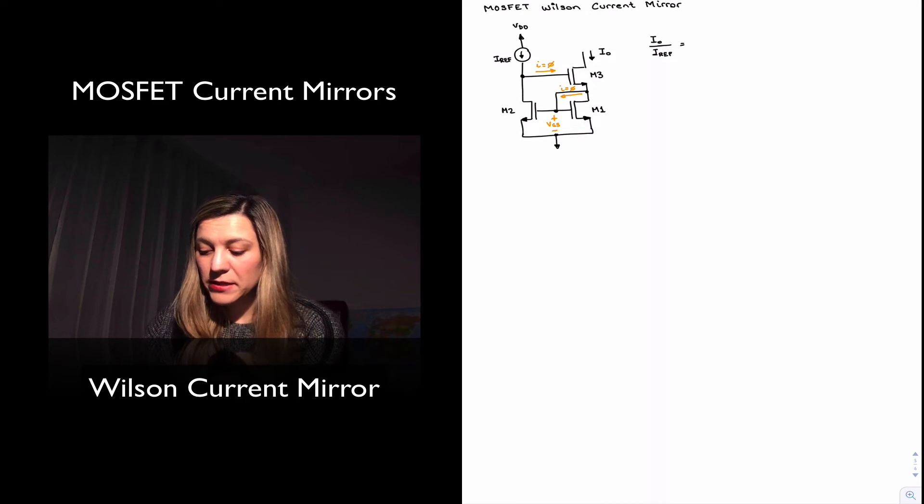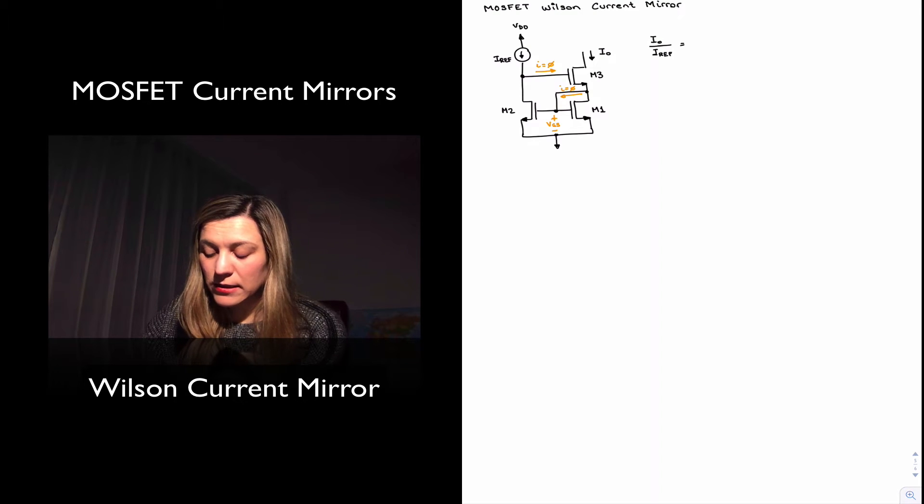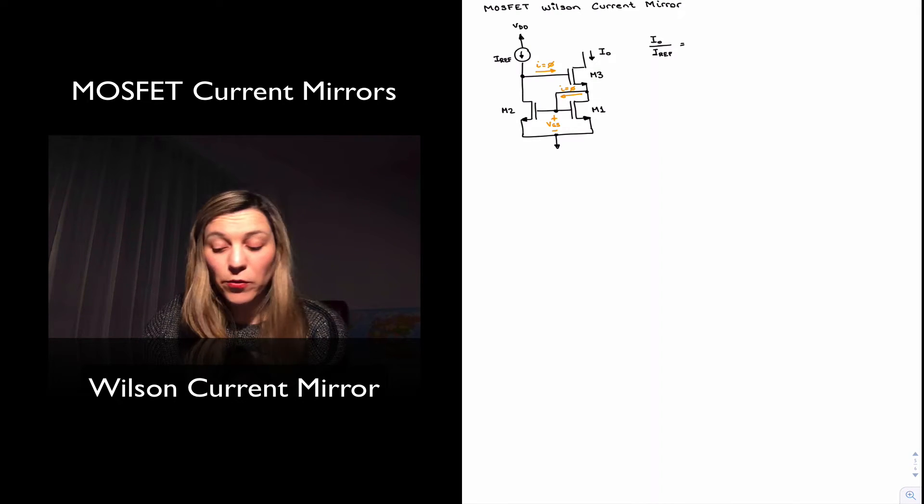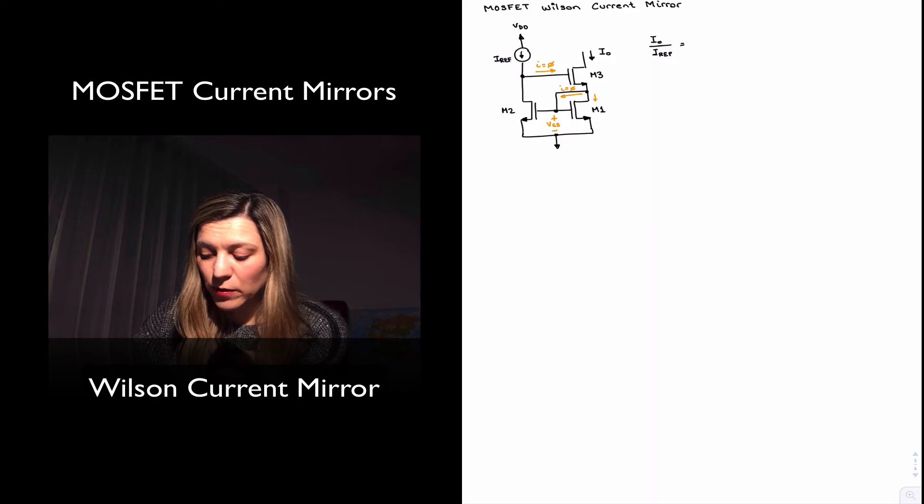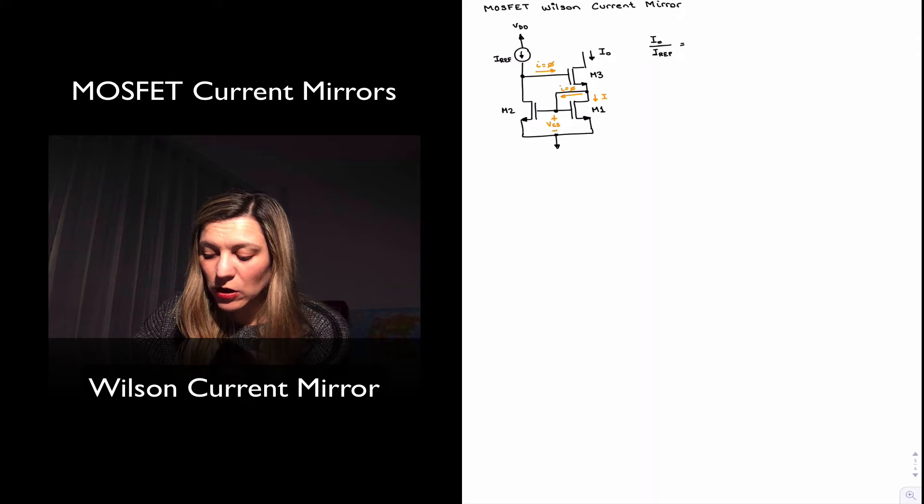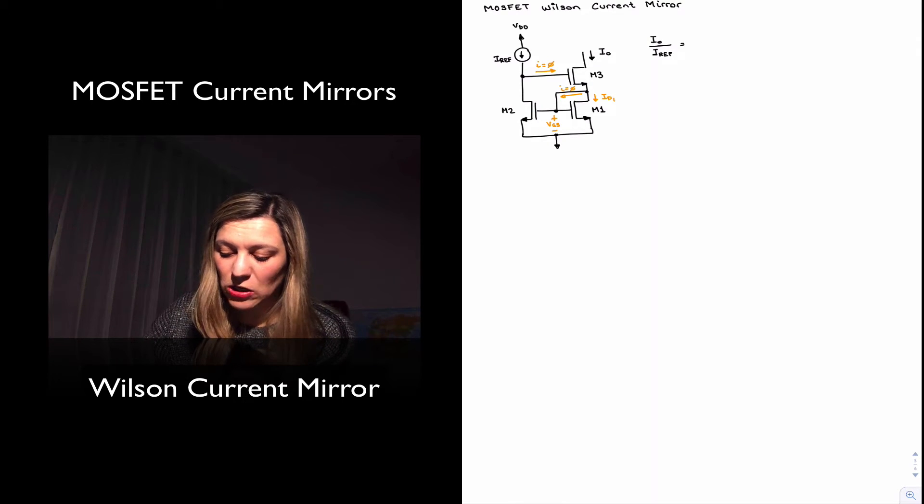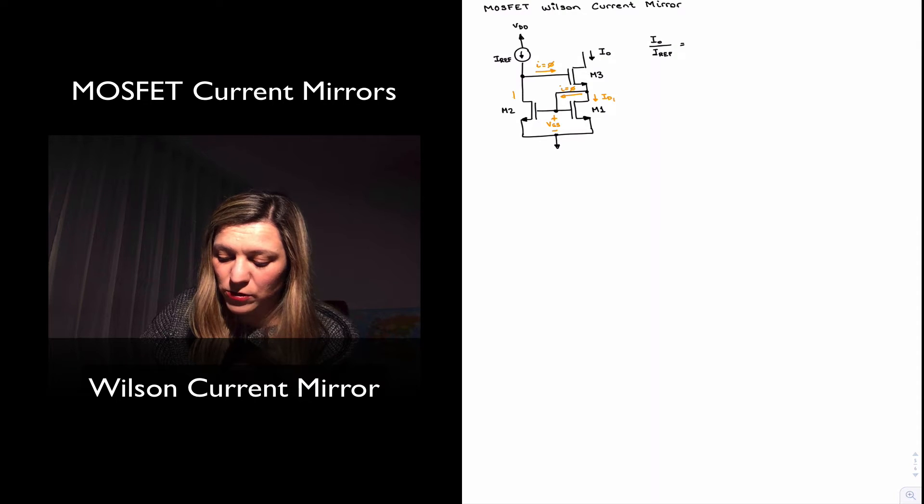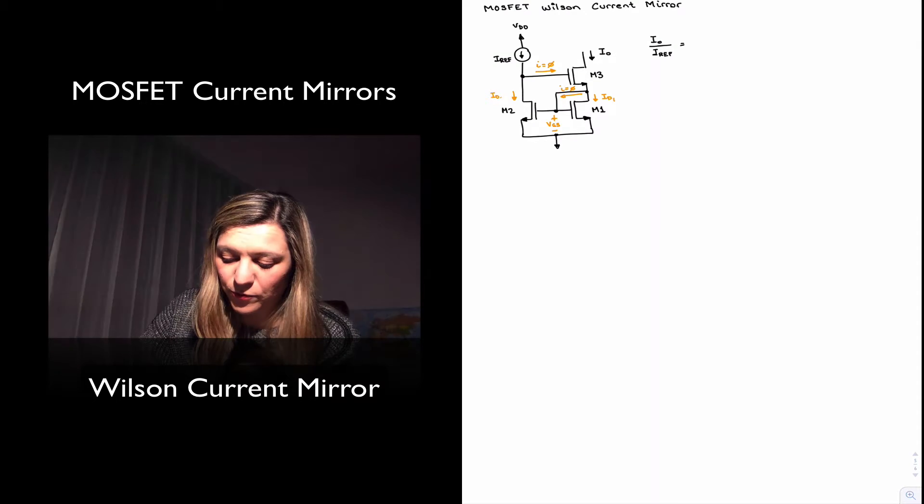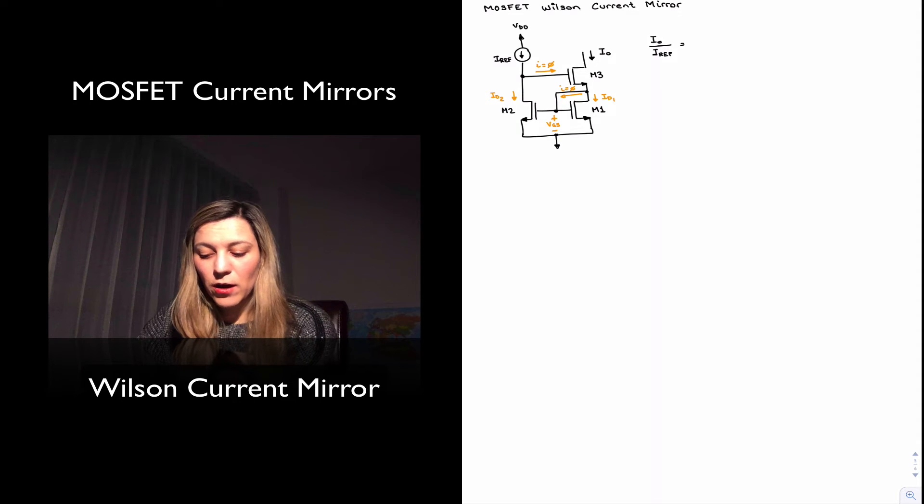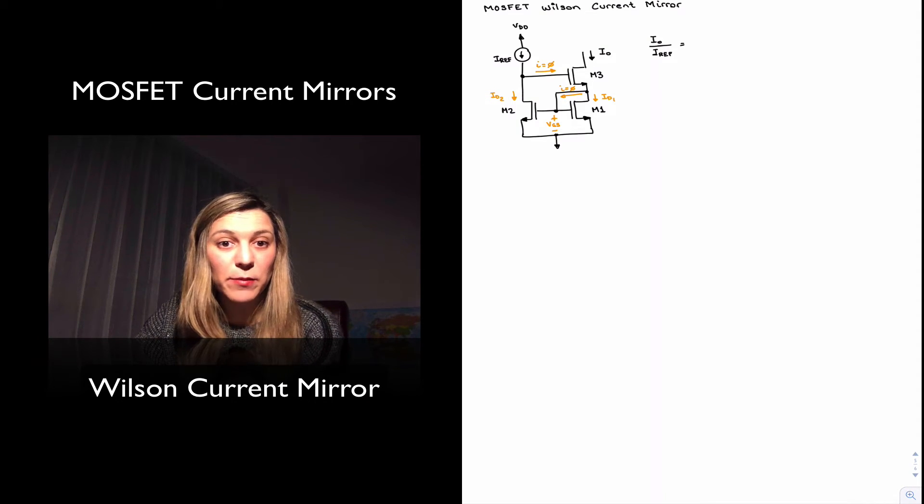And what that implies is that, in essence, my IOUT current that is flowing through M3 is equal to my ID1 current flowing through M1, since there is no current going into the gates of M1 and M2. And then since M1 and M2 have the same VGS voltage, then that current ID1 is equal to ID2, which again is equal to IREF because the current going into the gate of M3 is equal to zero.